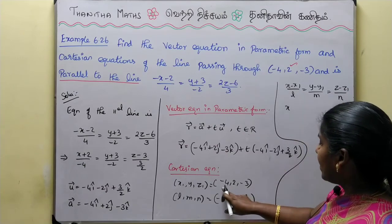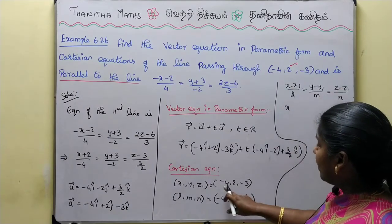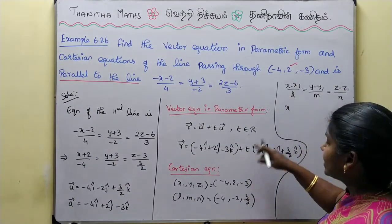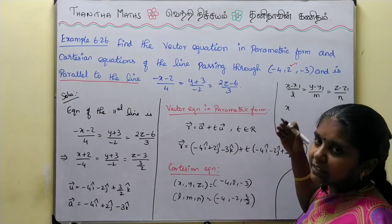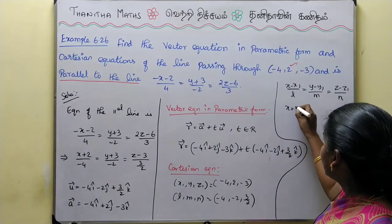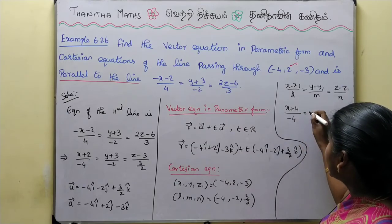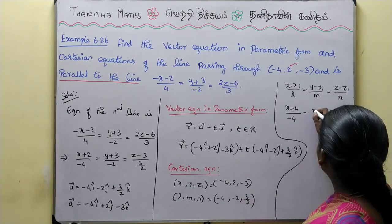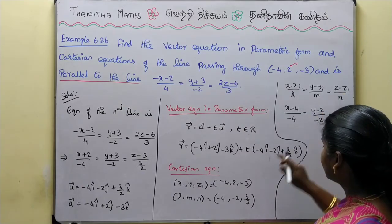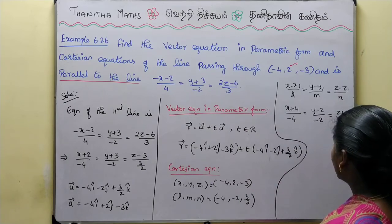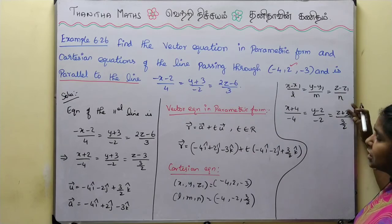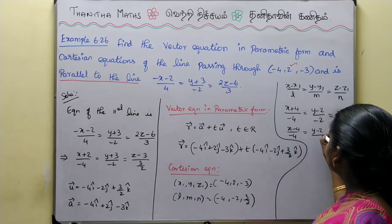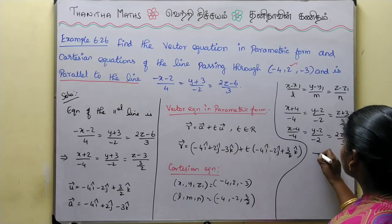Substituting into the formula: x1 = -4 gives x + 4; y1 = 2 gives y - 2; z1 = -3 gives z + 3. So the Cartesian equation is: (x + 4)/(-4) = (y - 2)/(-2) = (z + 3)/(3/2). This is our required answer.